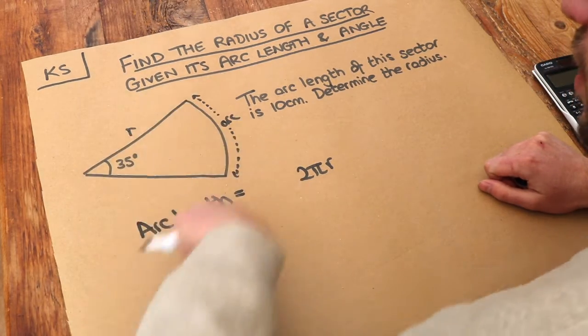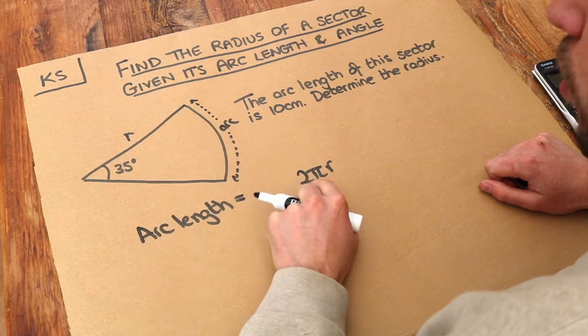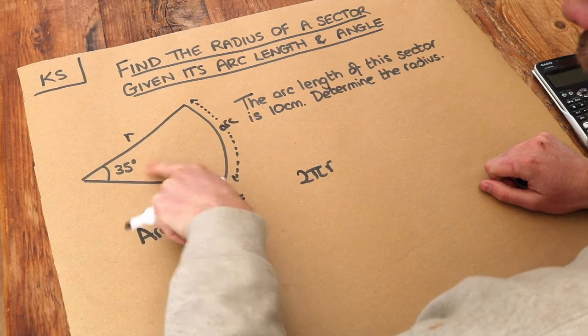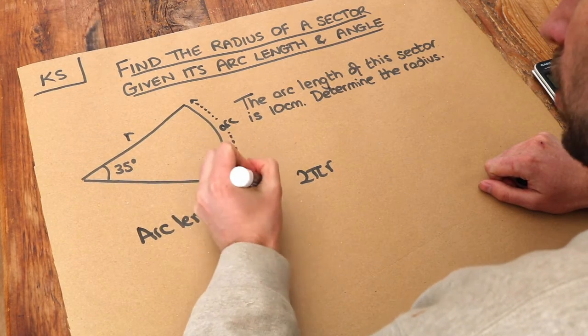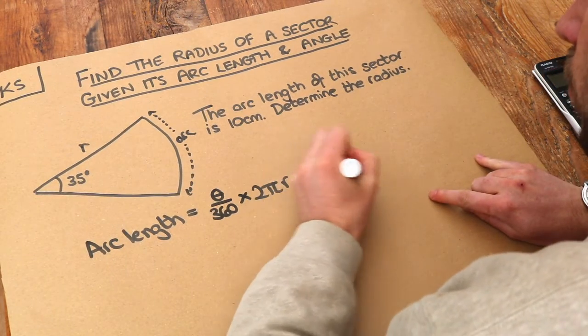If 2πr gives us the length of the full circle, we just want some portion of it. So what portion do we want? Well, whatever this angle is - let's call it theta (θ) - we do θ/360ths of a full circle. So if I've got a diagram like this,